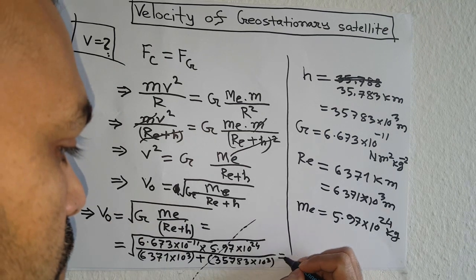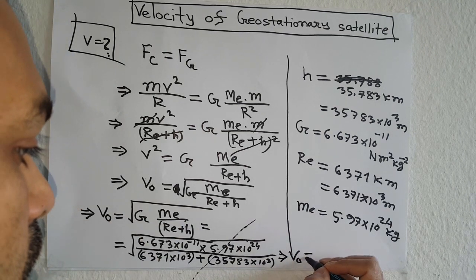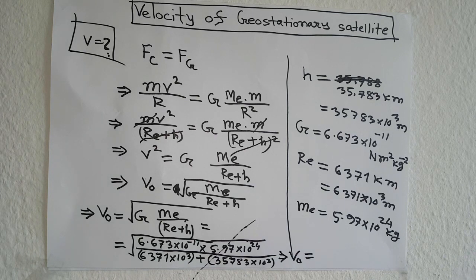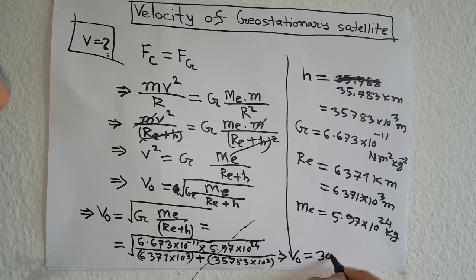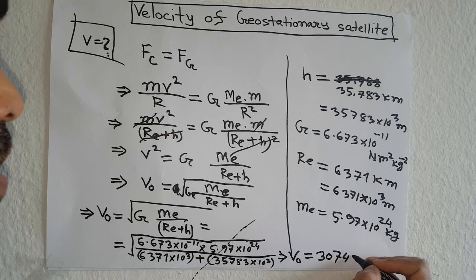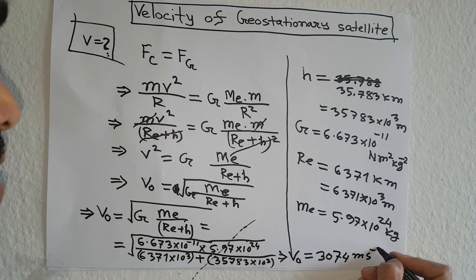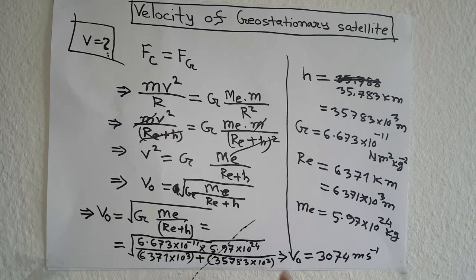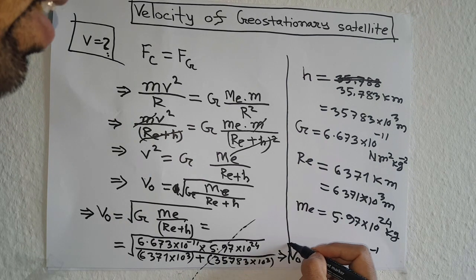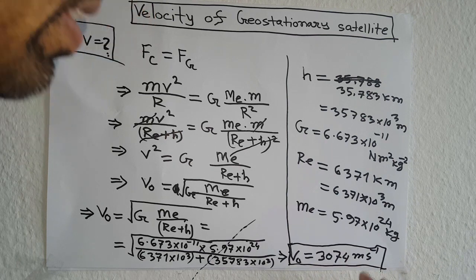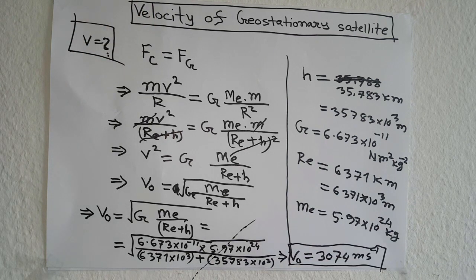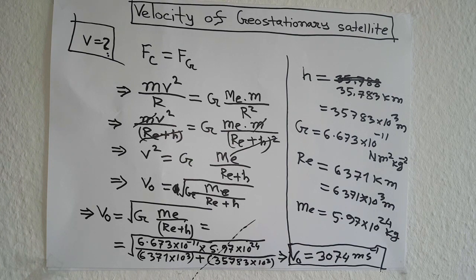Calculating this value including the square root, we get v₀ equals 3,074 meters per second. That means the velocity of a geostationary satellite is 3,074 meters per second — every second it moves 3,074 meters. This is the velocity of any kind of geostationary satellite.